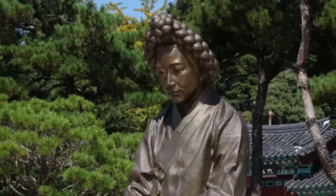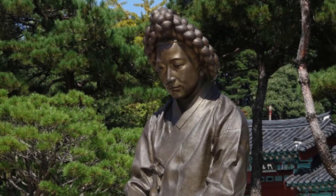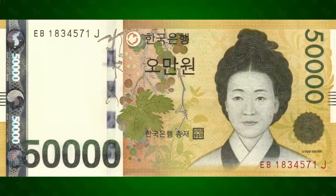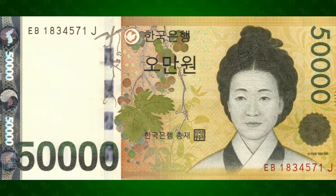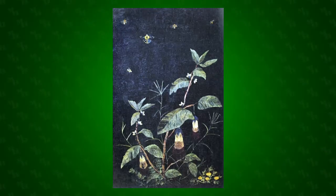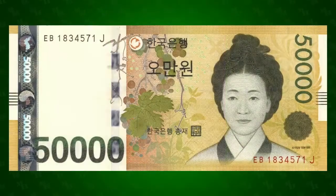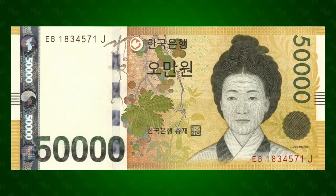Her son would go on to be one of the most important Confucian scholars in Korean history, leaving her with the reputation of the ideal wife and mother. Next to her portrait are two of her artistic works. In the foreground is a painting of a grape plant, and in the background is a folding screen embroidered with plants and insects, both common themes from the Joseon era.